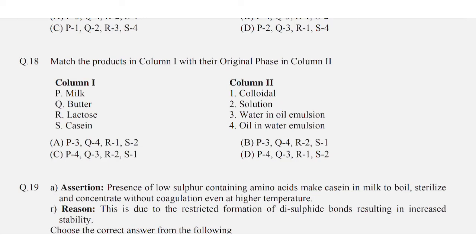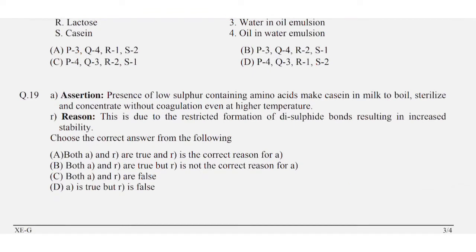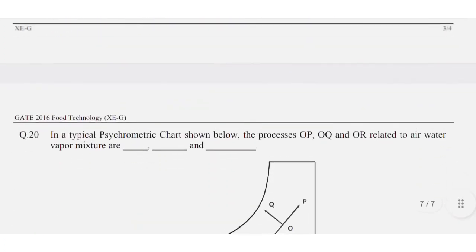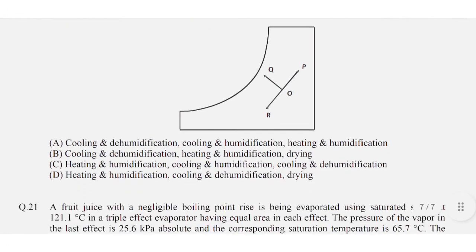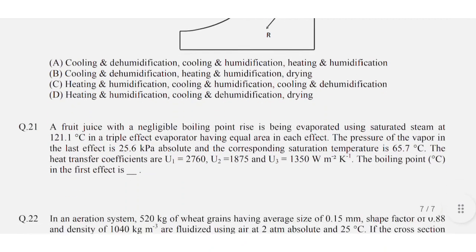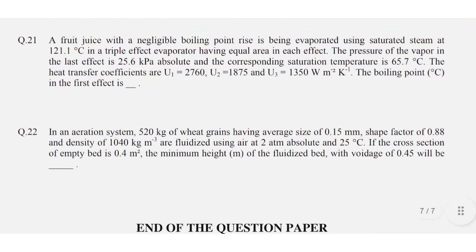Question number nineteen is an assertion and reason type question — option A is correct. Question number twenty: in a typical psychrometric chart, the processes OP, OQ, and OR related to air-water vapor mixture are — option C is correct: heating and humidification, cooling and humidification, and cooling and dehumidification. Question number twenty-one: the correct answer is 108 to 109. Question number twenty-two: the correct answer is 2.2 to 2.3. Thank you very much for watching this video.